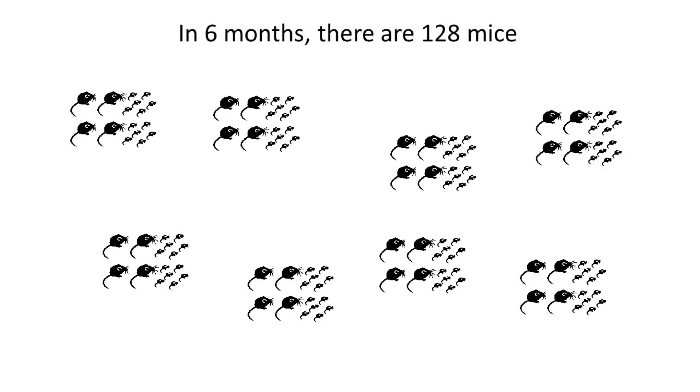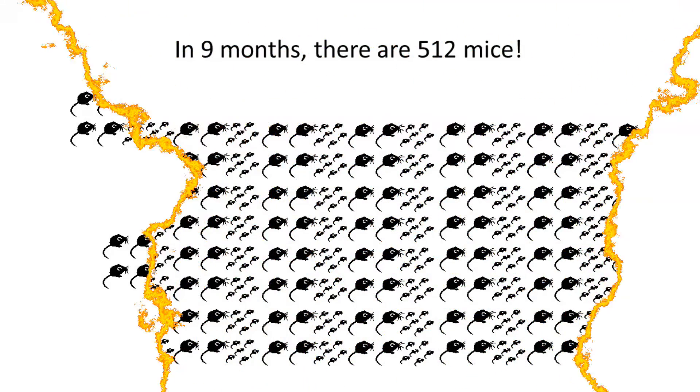In six months, there could be 128 mice. It is really easy to see how the population can boom. Mice damage homes with their gnawing of electrical wiring. Mice only eat about 3 grams of food a day and they can get all their necessary water from the food that they consume.